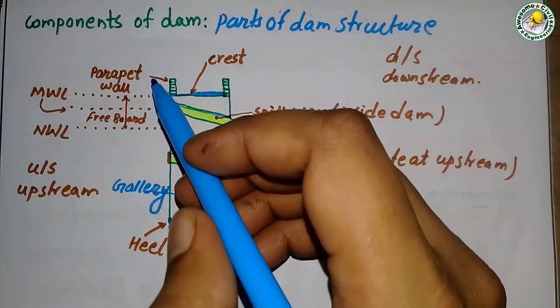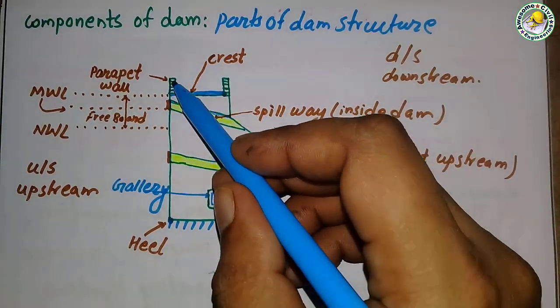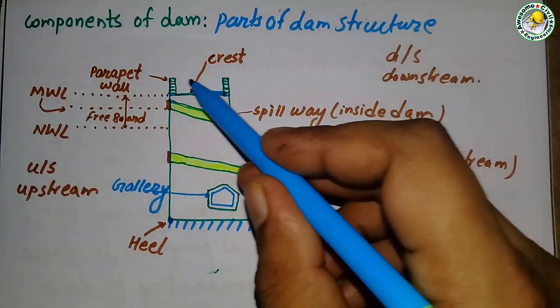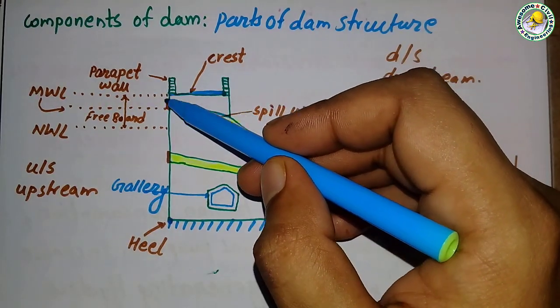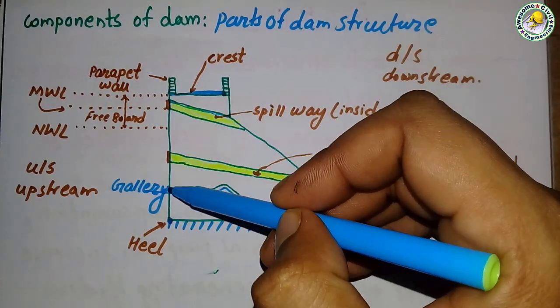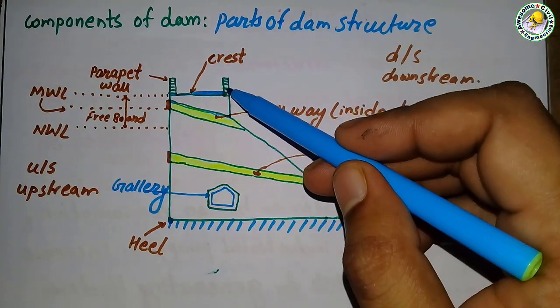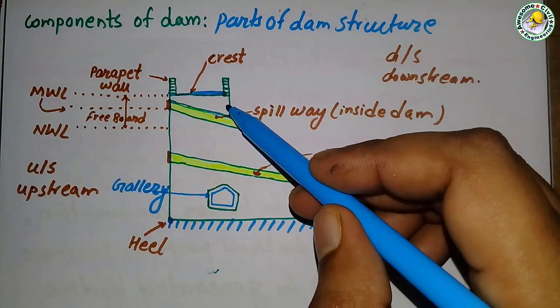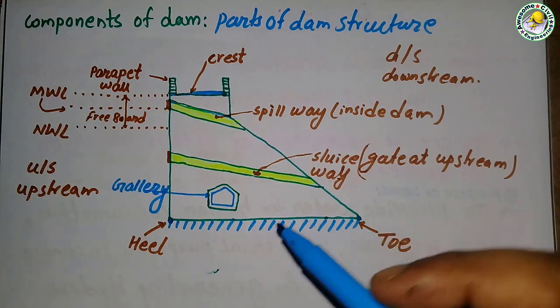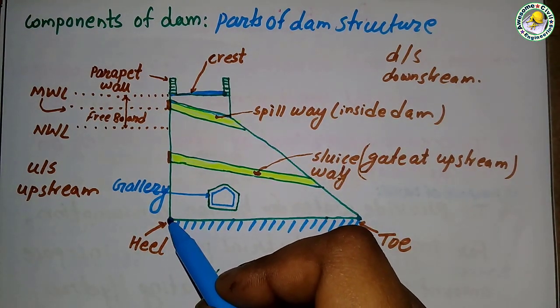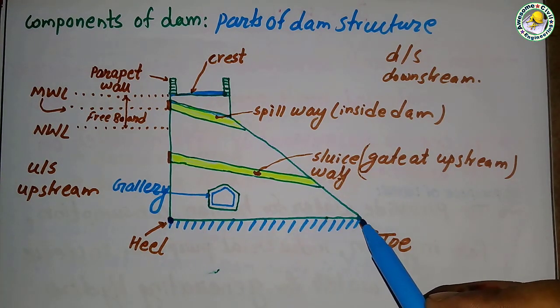Now we will discuss the components of dam or parts of a dam structure. Here the cross-section of the dam structure is shown. First of all, the upstream surface is always vertical, and the downstream surface is sloped. The upstream bottom point is heel and the end point...